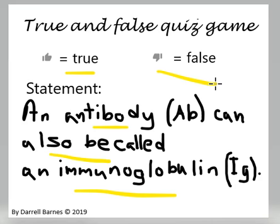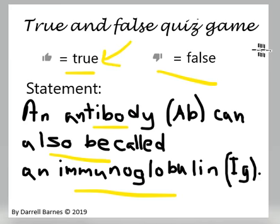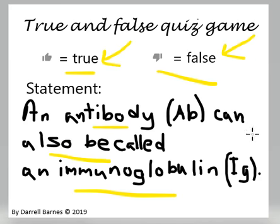An antibody (AB) can also be called an immunoglobulin. In the comments below, let me know why you think this is true or why you think this statement is false.